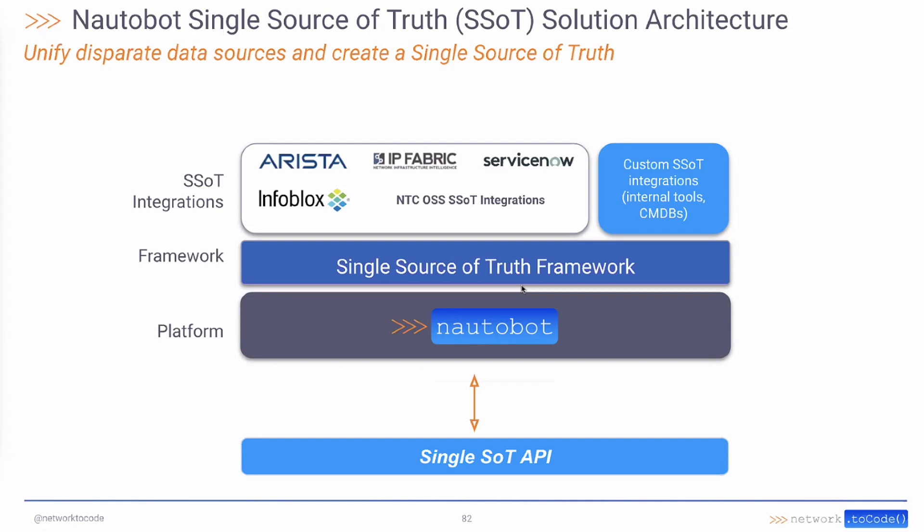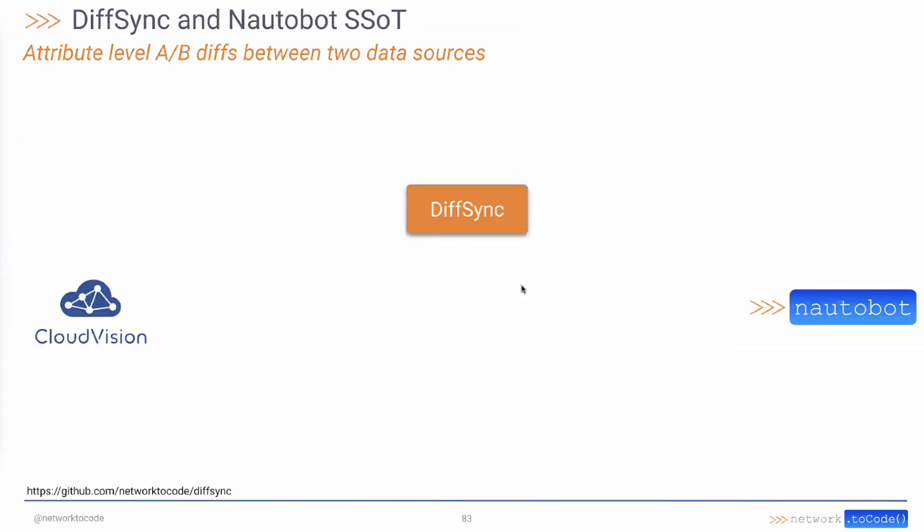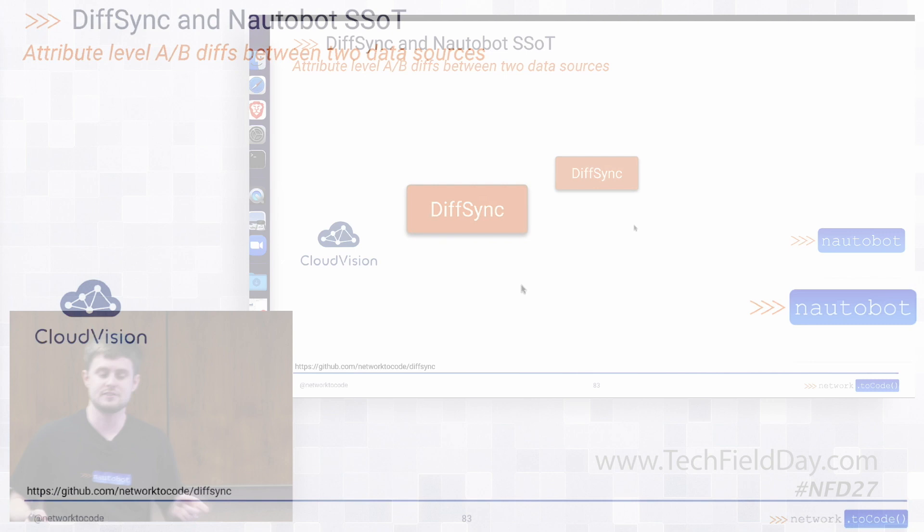This is where a library called DiffSync comes in. It's an open source Python library that Network to Code has created that allows us to do attribute-level A/B diffs between two data sources — think of it like a Linux diff or a git diff, where we've got one view of the data and another, and we do a difference between them to see what's added or changed on either side. The SSOT framework within Nautobot uses this DiffSync library as the workhorse for producing synchronization between two systems.